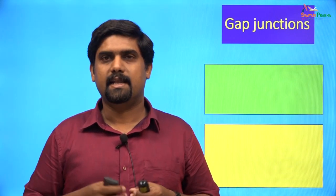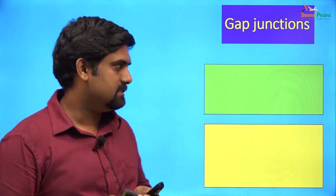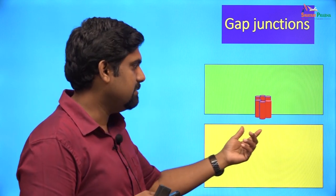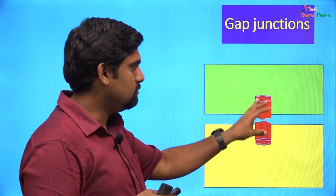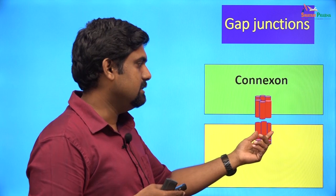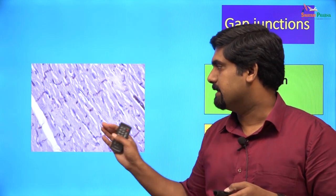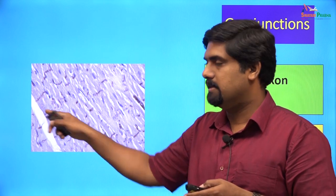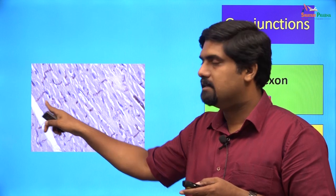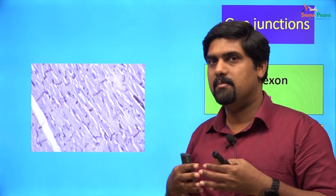Electrical activity can spread through gap junctions, which are present between adjacent cells. Each cell has a hemi-channel made of six subunits called connexins; two hemi-channels from neighboring cells come together to form a gap junction, known as a connexon. The gap junction is made of connexin proteins, which can be stained by immunohistochemistry. This is the picture of a rat ventricle subjected to immunohistochemistry to detect connexin proteins. These stained regions are where gap junctions are present — they correspond to the intercalated disks, where cell membranes of adjacent cells come together.